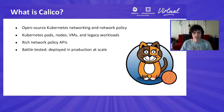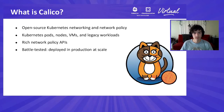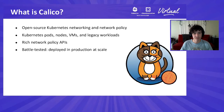Calico is an open source networking and network policy provider. It can provide networking and network policy for Kubernetes pods, but also Kubernetes nodes, VMs, OpenStack, and legacy workloads. Calico supports the native built-in Kubernetes network policy APIs, as well as a rich extension set of APIs that are native to Calico. Calico itself is battle-tested — it's been deployed in production for years and is really the most common choice in clusters that need to scale and where performance really matters.